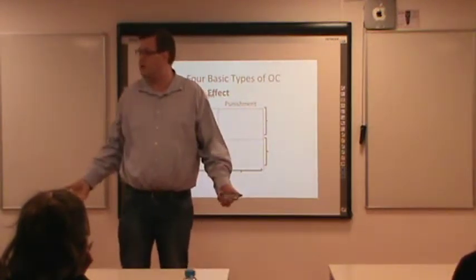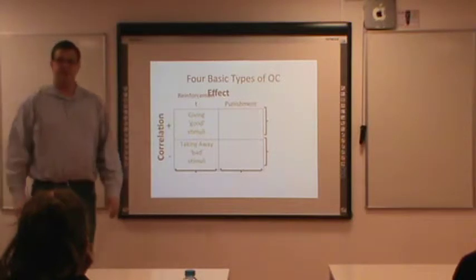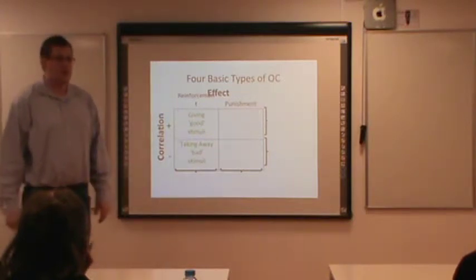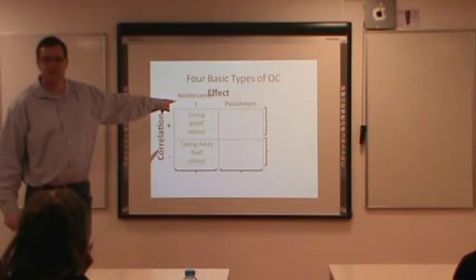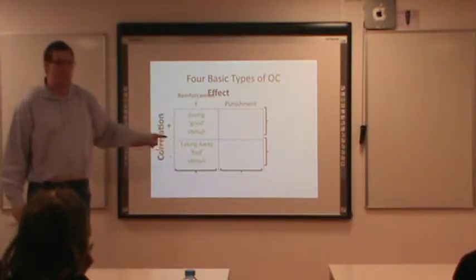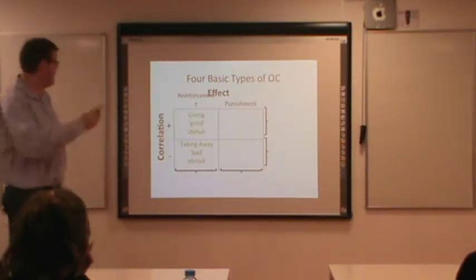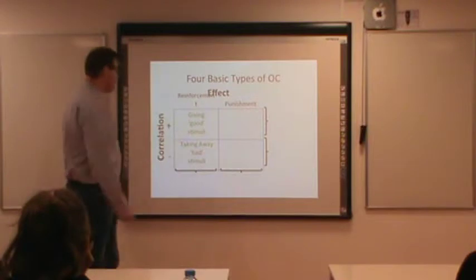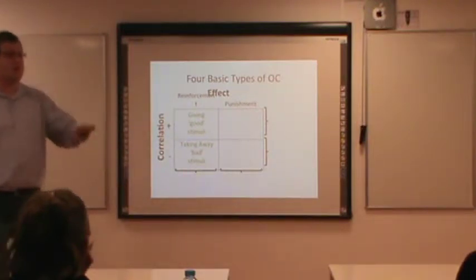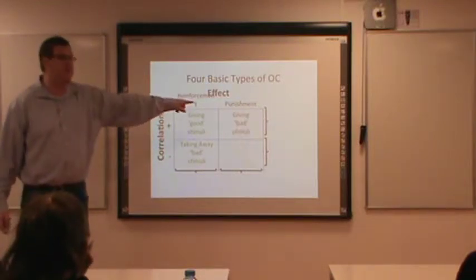With reinforcement, both positive and negative types are good outcomes for the organism. If it doesn't produce a good outcome, it's not going to increase their behavior. With punishment, both are bad outcomes. Depending on what we take away or give will determine whether it's reinforcing or punishment. Good outcomes for reinforcement, bad outcomes for punishment; more stimuli for positive, less stimuli for negative.